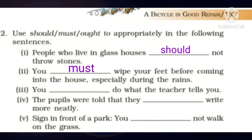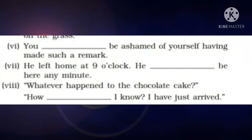Third one: You must do what the teacher tells you. Number four: The pupils were told that they should write more neatly. Number five — sign in front of a park: You must not walk on the grass. Number six: You ought to be ashamed of yourself having made such a remark. Number seven: He left home at nine o'clock. He should be here any minute.